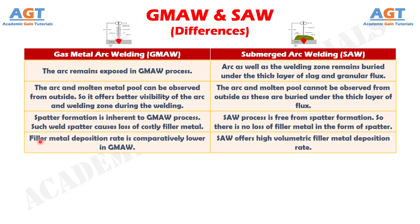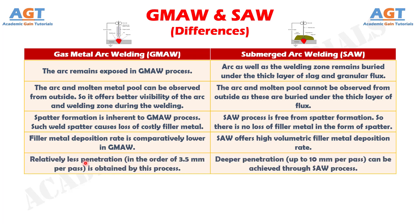Number 9: Filler metal deposition rate is comparatively lower in gas metal arc welding, whereas submerged arc welding offers a high volumetric filler metal deposition rate. Number 10: Relatively less penetration, in the order of 3.5 mm per pass, is obtained by gas metal arc welding, whereas deeper penetration, up to 10 mm per pass, can be achieved through submerged arc welding.